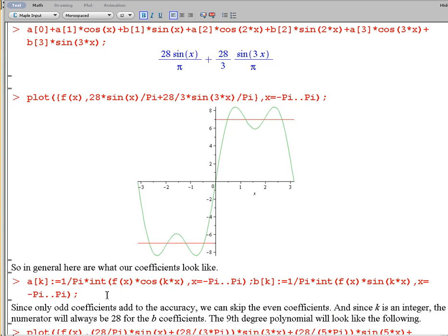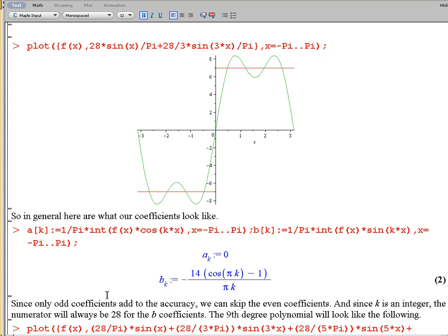So now let's get a general look at our coefficients, just finding what a sub k and b sub k look like. a sub k turns out to be 0. That's going to happen a lot with Fourier series and Fourier polynomials, because we deal a lot with even and odd functions, and when you're taking the antiderivative, or the integral of an odd function, over an interval that's symmetric around 0, then the integral will come out to be 0.